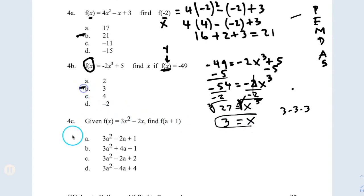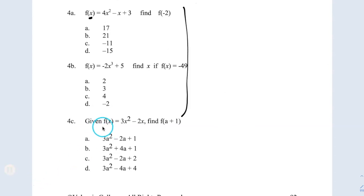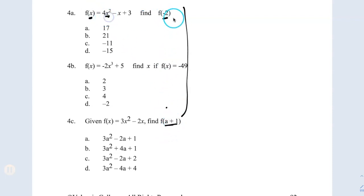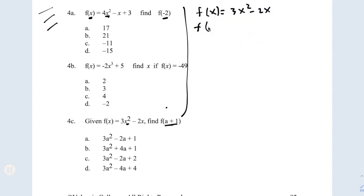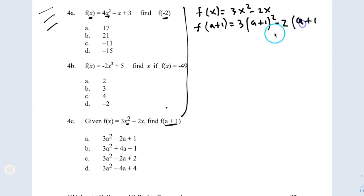Let's go to question C. For C, we have f of x equals this function. Now what's going on — they're saying a plus 1 instead of only a value; they're giving you a plus 1. But the process is the same: whatever you see in x, you replace it with a plus 1. So f of a plus 1 is the same as 3x squared minus 2x, but wherever you see x, put a parenthesis — a plus 1 — to the second power, minus 2 times a plus 1.